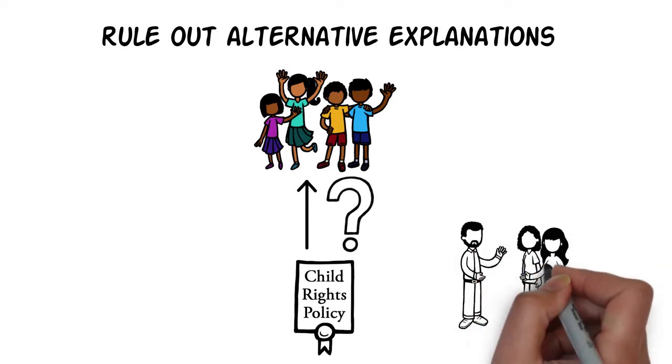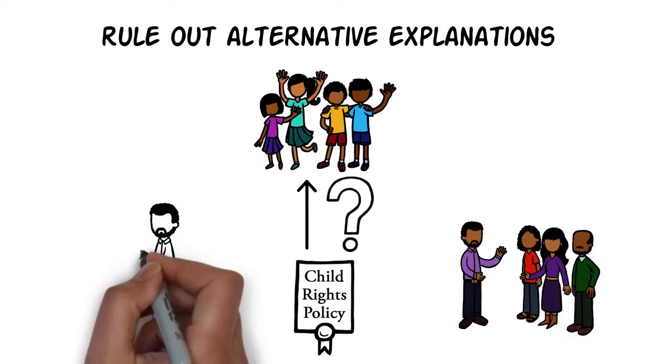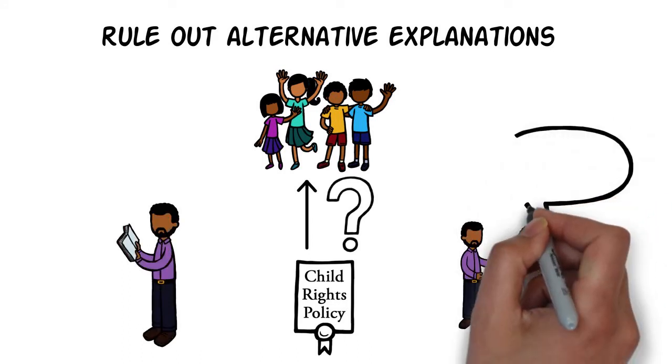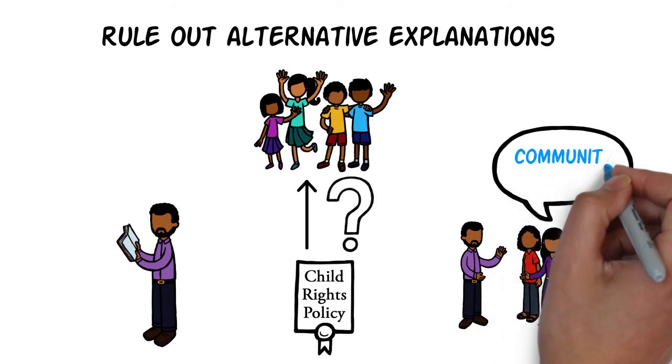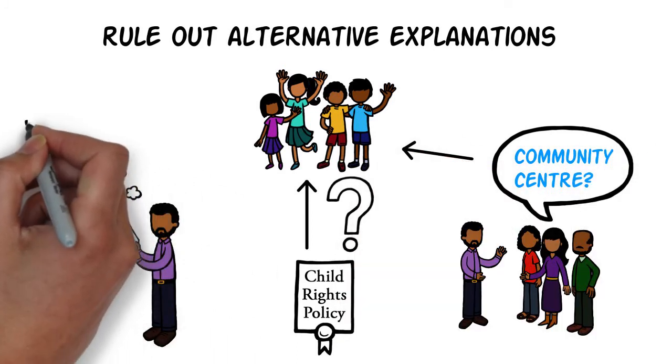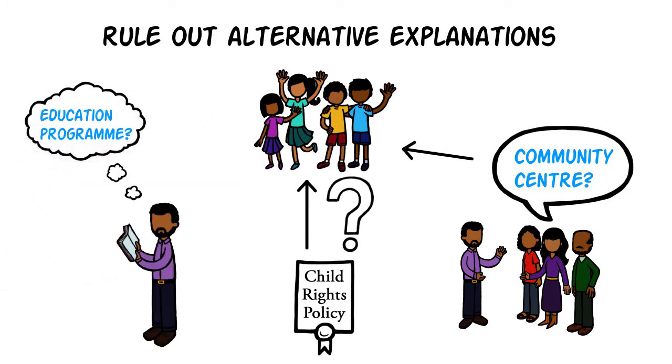Carlos can get advice from experts, community members, and other stakeholders to identify other possible explanations. For example, maybe it was action by grassroots organisation that led to better child wellbeing without the need for a national policy. Or it could have been a new national child education programme rather than a child rights policy.